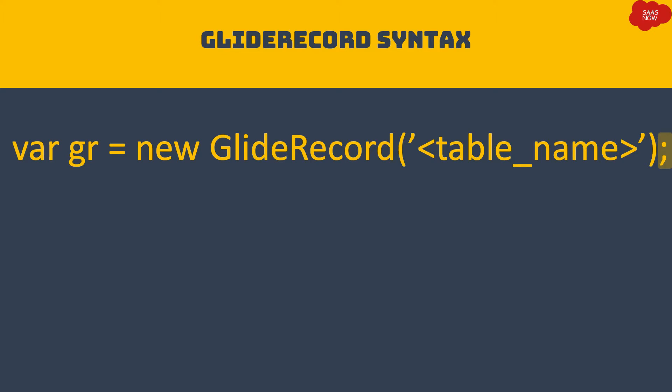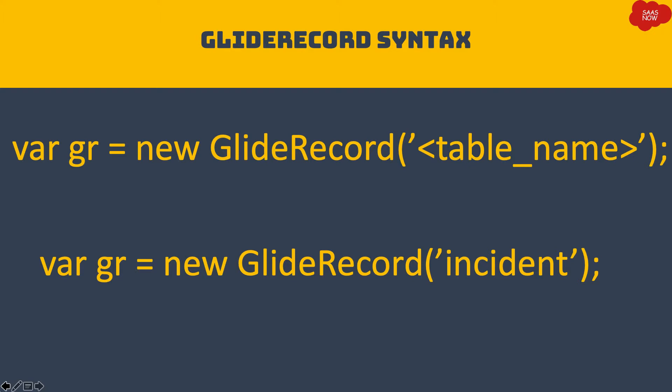For example, to perform operations on the incident table, you mention 'incident' as the parameter. In this script, 'gr' and 'incident' are the dynamic parts that can be changed — 'gr' is a variable you can rename, and the parameter is the table you want to query. The rest of the syntax should remain the same from a syntax perspective.